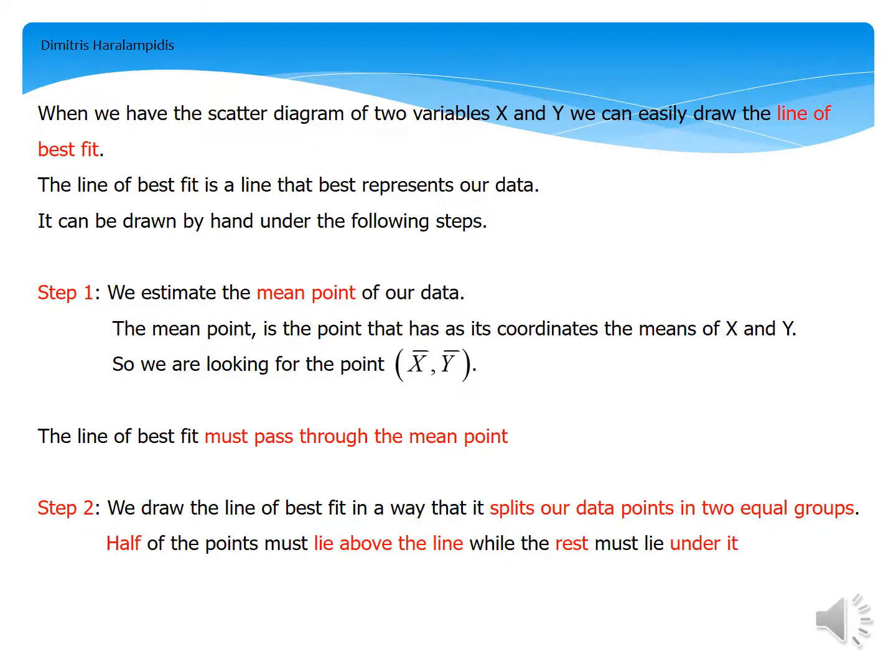When we have the scatter diagram of two variables X and Y, we can easily draw the line of best fit. The line of best fit is a line that best represents our data. It can be drawn by hand under the following steps.